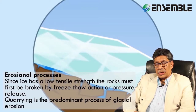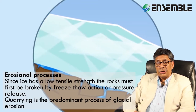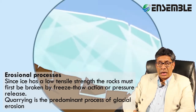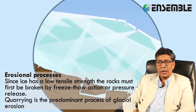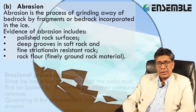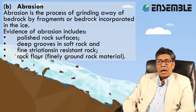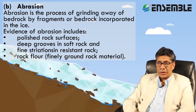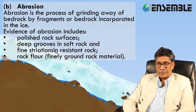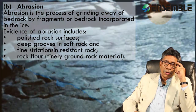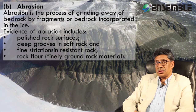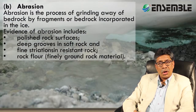Since ice has a low tensile strength — that is, resistance to breaking under strain — the rocks must first be broken by freeze-thaw action or pressure release. Quarrying is the predominant process of glacial erosion. The second process is abrasion, which is the grinding away of bedrock by rock fragments incorporated in the ice. Evidence of abrasion includes polished rock surfaces, deep grooves in soft rocks, and fine striations in resistant rocks, as well as rock flour.